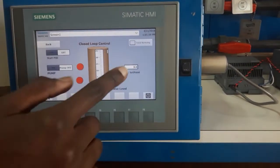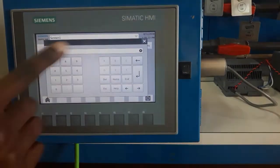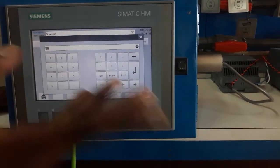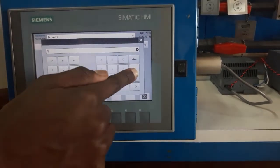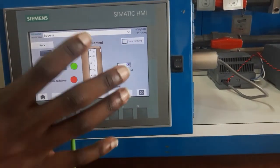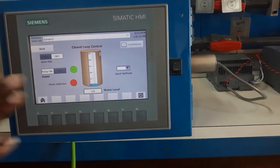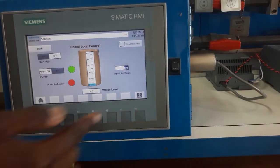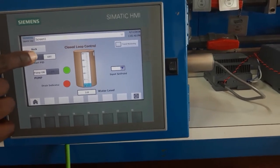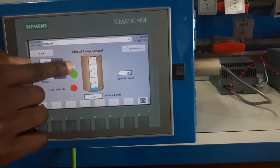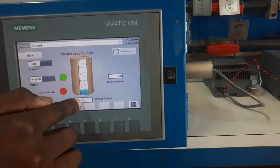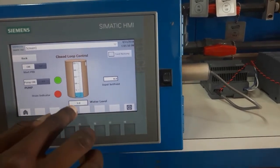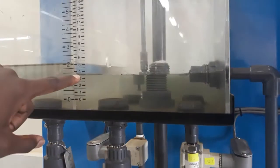Then we start the process by inputting the setpoint, which in our case, we can choose any random value between 0 and 25. I'll choose 8. Inputting the setpoint, the system senses that the PV is below the setpoint, and it automatically starts the pump. Then you can also start the PID process.